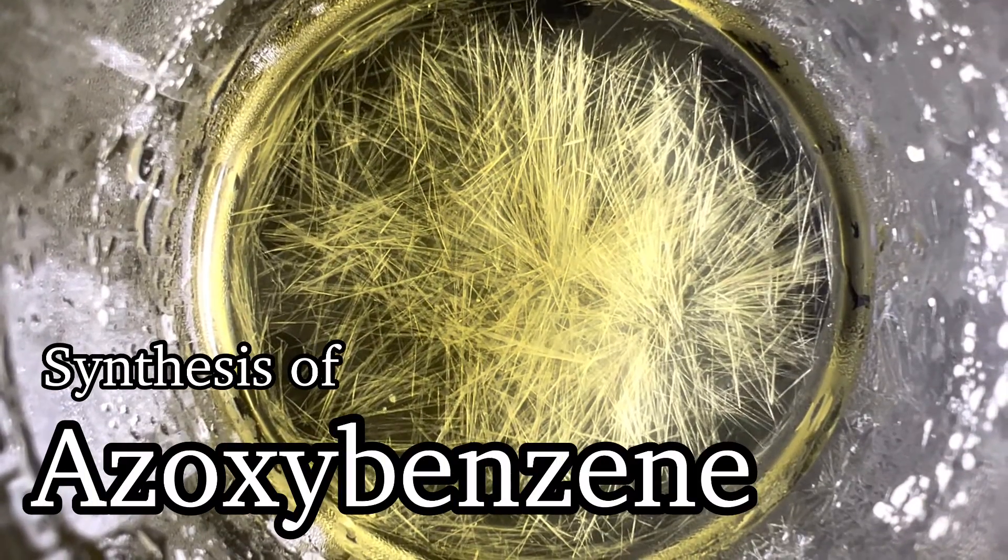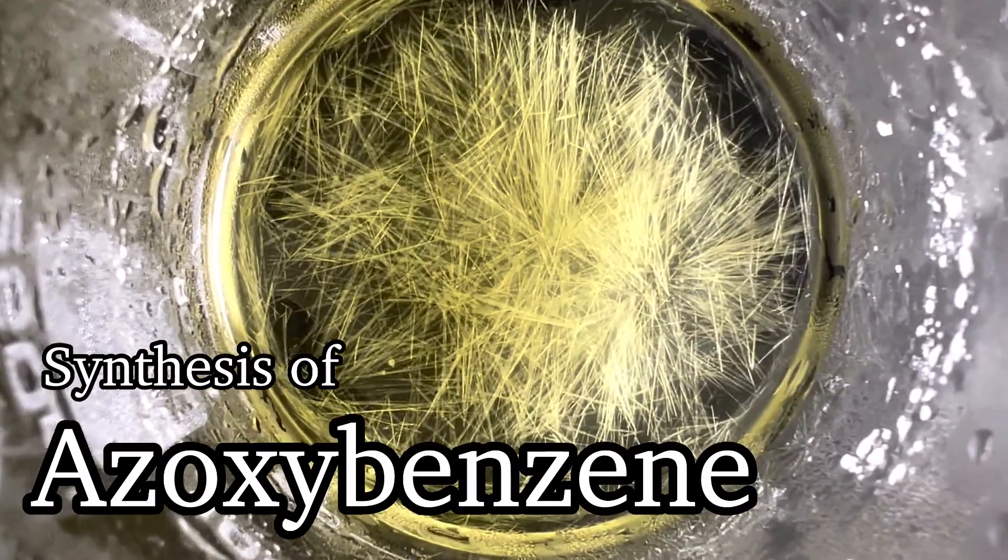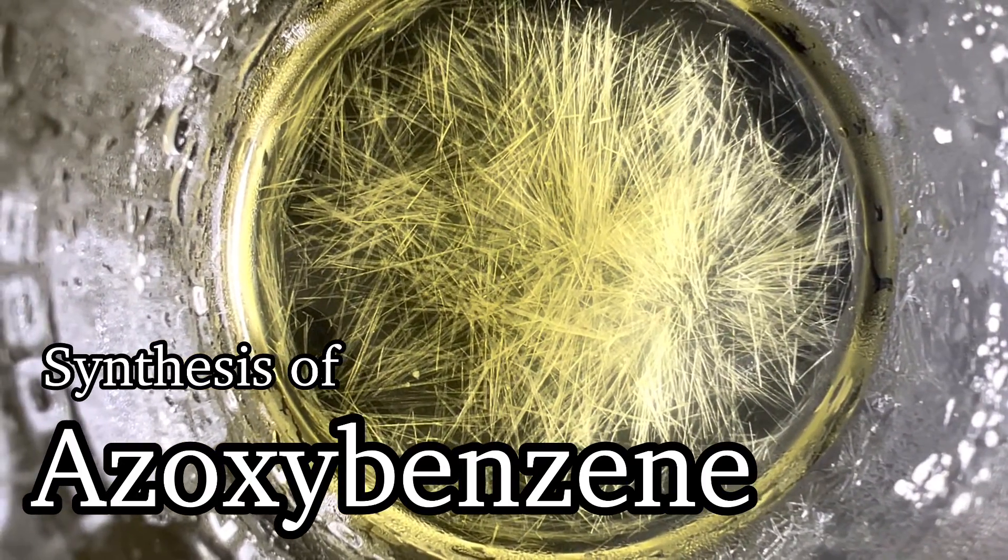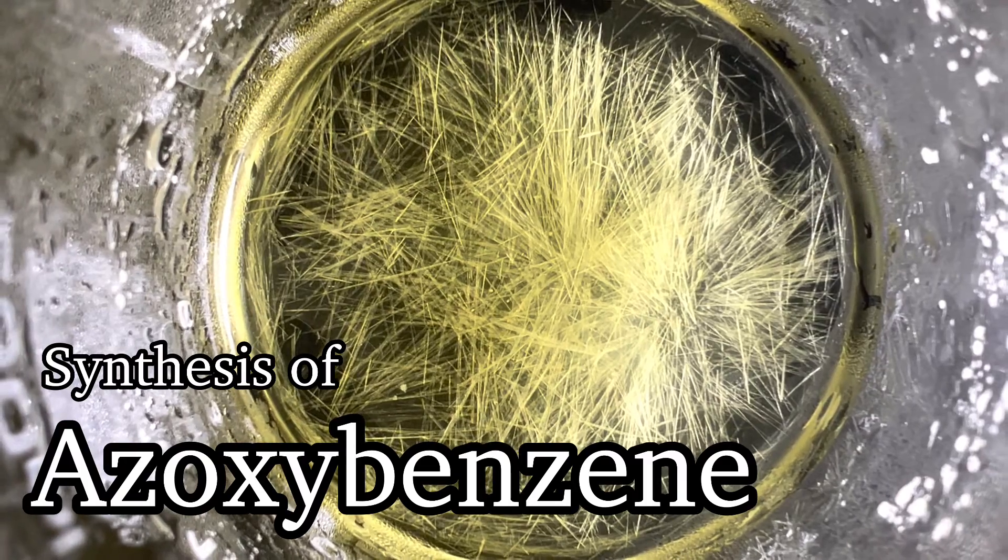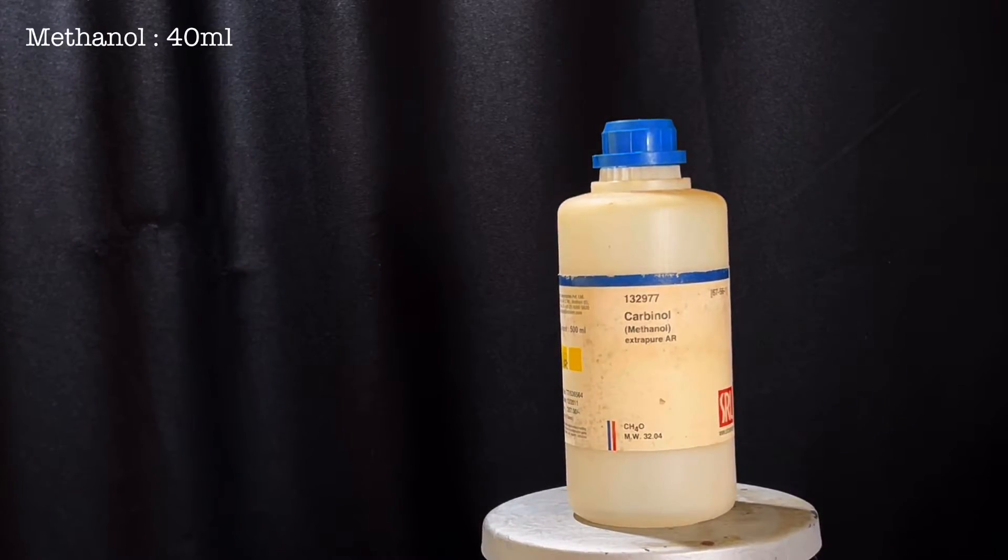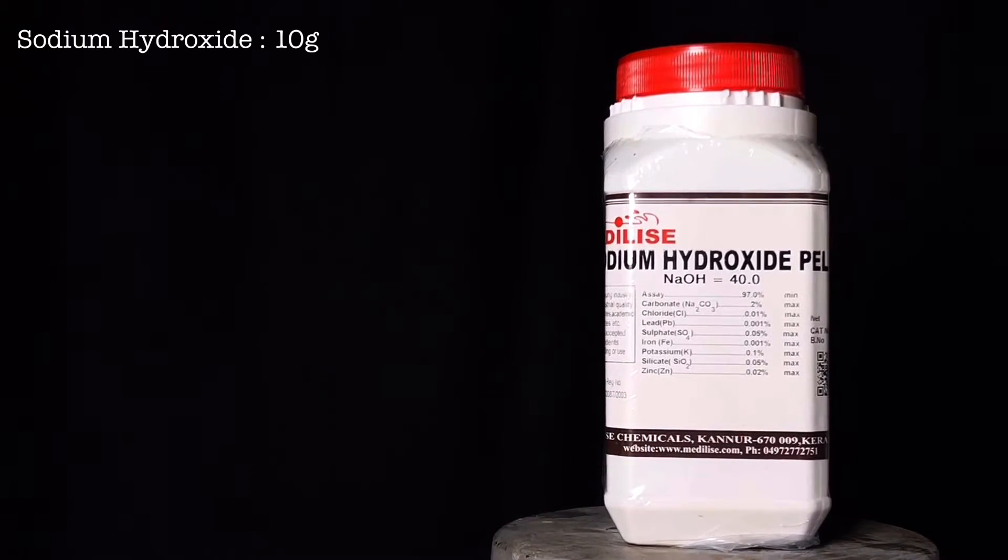Hello friends, in this video we will be synthesizing azoxybenzene by the partial reduction of nitrobenzene with methanol in the presence of sodium hydroxide. Chemicals required for this synthesis are 40 milliliters of methanol, 10 grams of sodium hydroxide pellets, and 6.2 grams of nitrobenzene.